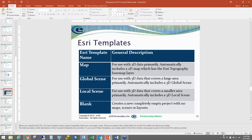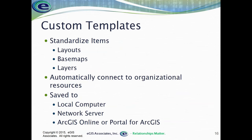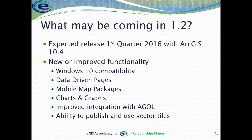If you use one of the Esri templates, it comes with four options. The Map template starts with a blank 2D map. You can always add a 3D map or other layouts later. The Global Scene does a 3D map using the globe for large areas. The Local Scene does a 3D map similar to what you'd get with ArcScene. The Blank template has nothing and you get to add whatever you want. Those are the templates that come out of the box, and you can customize those as well.